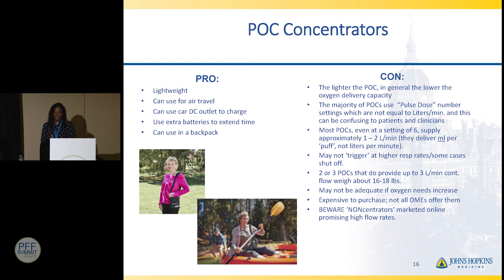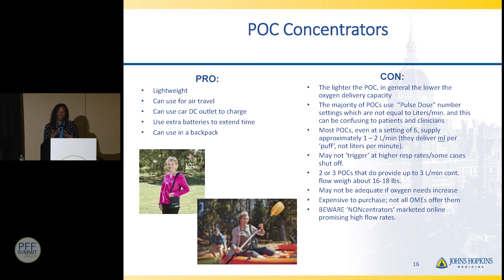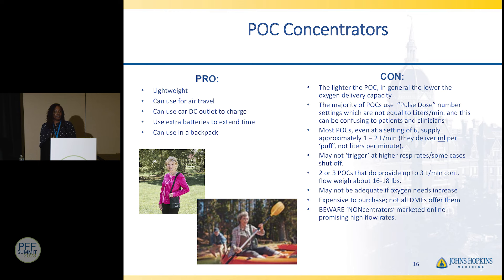Most POCs at a setting of six only deliver about 1 to 1.75 liters per minute. At higher respiratory rates, the device may trigger a shutoff, indicating the need to transition to a continuous device. This can be alarming when away from your home unit. We try to be transparent — if you're considering a POC, get tested on one prior to purchasing.